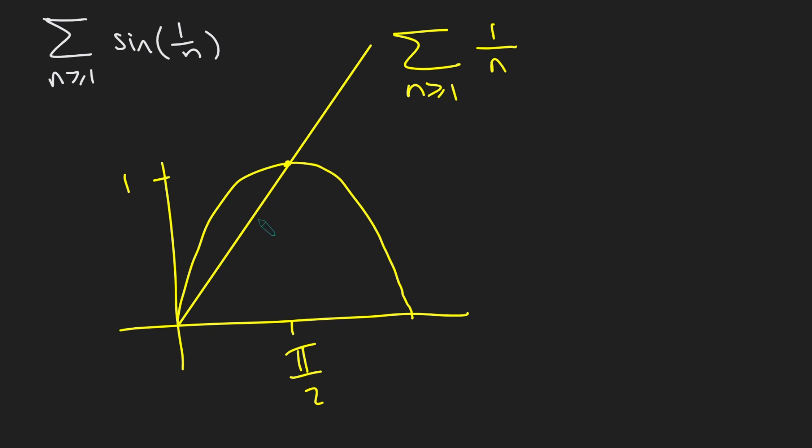And now you can prove this rigorously using the fact that sine x is a convex function, sorry, a concave function, just by taking its second derivative. And what this tells us is that the y value on the sine graph is bigger than the y value on the straight line graph.